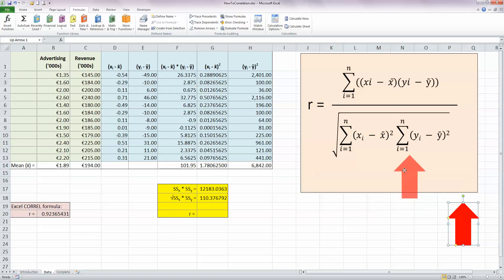So now I have over here, 101.95 is my figure for the numerator at the top. And down here, I've got 110.376792, which is my total figure for the denominator here in the bottom. And the final thing for R is just to divide one by the other. So my formula here is equals my one value of 101 divided by my value of 110 here and press enter.